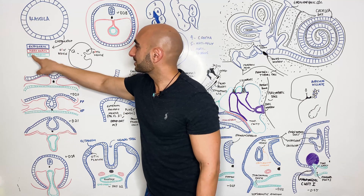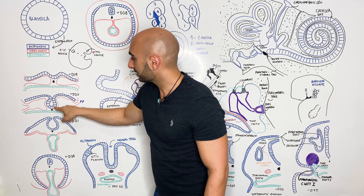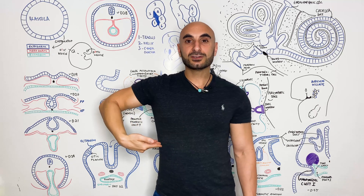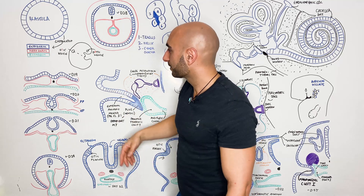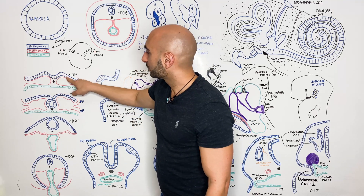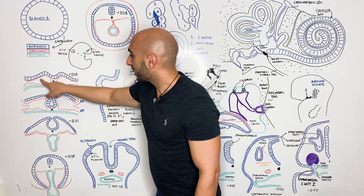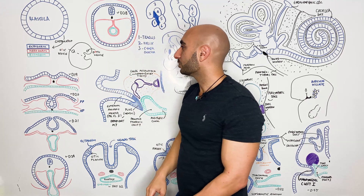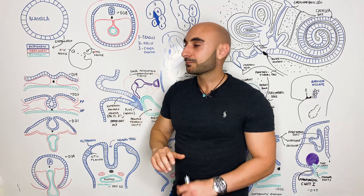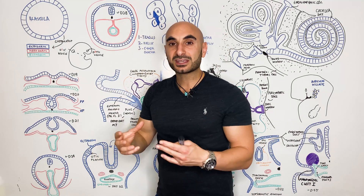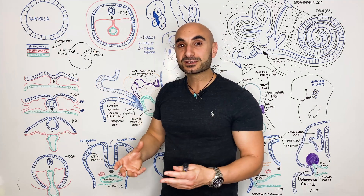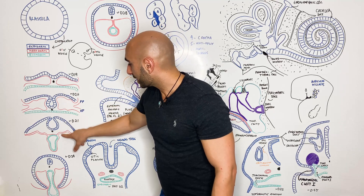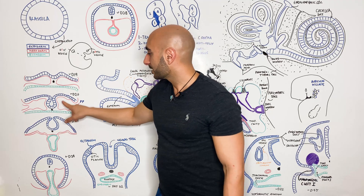This is an oversimplification shown here as a cross-section of the developing embryo. In blue we have the ectoderm, in red we have the mesoderm, and in green we have the endoderm. The ectoderm will become skin and nervous system tissue. The mesoderm will differentiate and it has three parts to it.